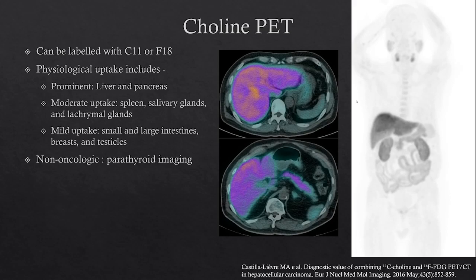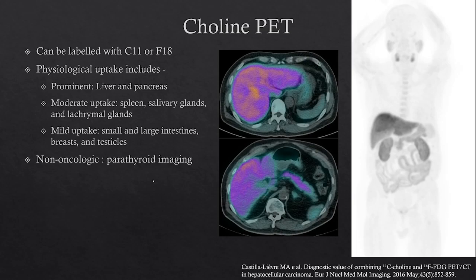Here are some images of choline PET. Choline can be labeled with either C11 or F18; these images are of F18-choline PET. Typical sites of prominent uptake include the liver and pancreas. Other sites of moderate uptake include the spleen, salivary glands, and lacrimal glands. You can also see mild uptake in the small and large intestines, breasts, and testicles. Choline PET is currently seeing increasing use not just for oncology but also for non-oncologic parathyroid imaging.